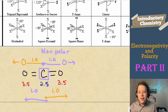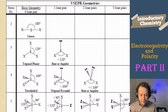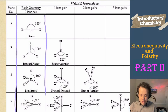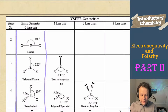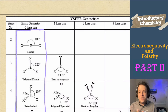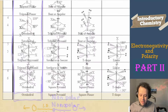When we have a central atom with no lone pairs bound to the same atoms, it's going to be non-polar. Looking at the first column of geometries — linear, trigonal planar, tetrahedral, trigonal bipyramidal, octahedral — all of these are capable of being non-polar because of even pulling.